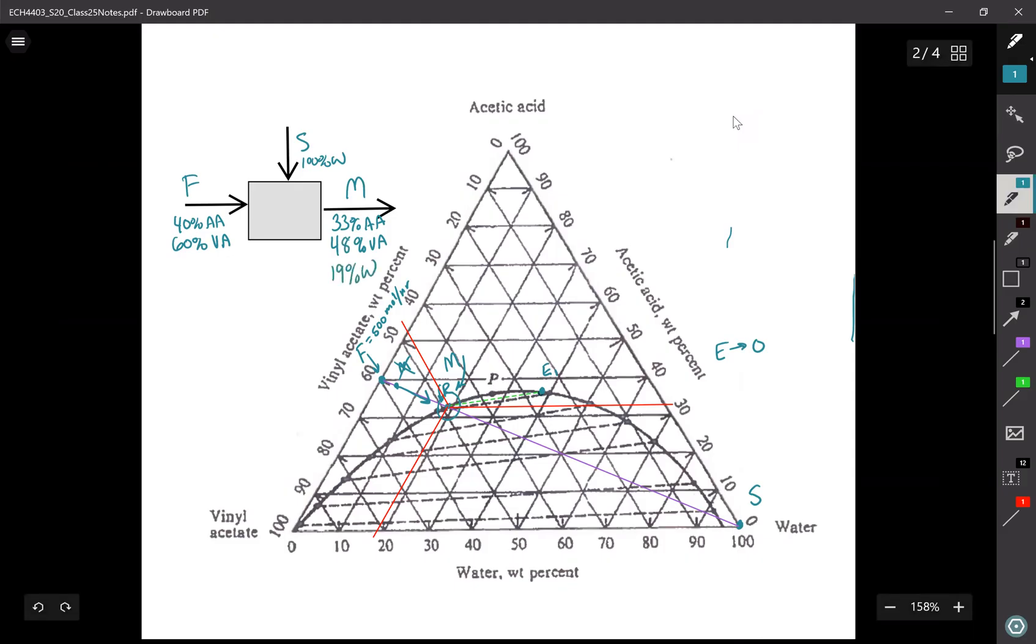So the reason I was hesitating there is because the original way that I read it meant that I had to have 20% water, which would be right on this line, and that wasn't the case. So again, in real life, no real engineer actually solves these problems by drawing lines on diagrams. You have process simulation software that helps you with all this stuff. The goal of this class is to understand what the process simulation software is doing. So just keep that in mind.